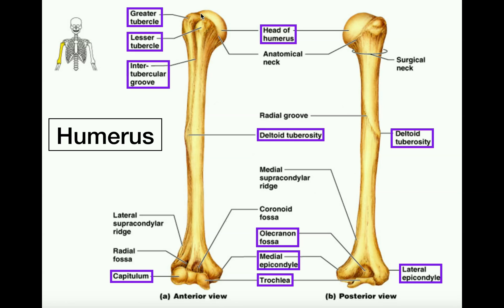It's this rounded part right here, and keep in mind that the head of the humerus is going to have to point toward the torso, because that head of the humerus is what inserts into the shoulder joint.